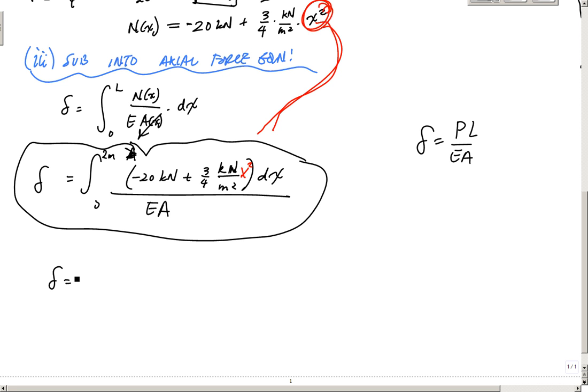This delta is... this EA pops out because these are constants, okay? And then here, zero... oh, I don't want to write that. I want to undo that. But this integral would just be minus 20 kilonewtons times x plus 3 fourths kilonewton per meter squared times x cubed over 3, and evaluate it from 0 to 2 meters.